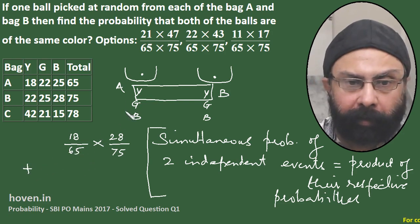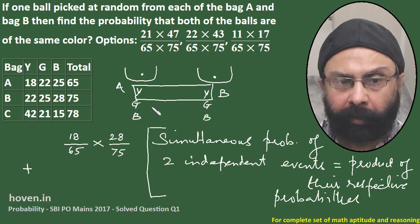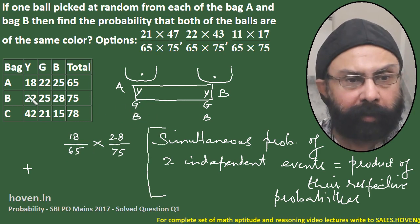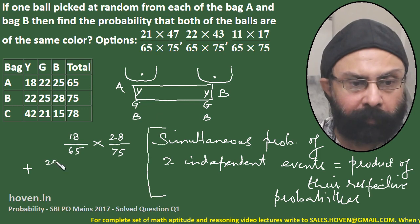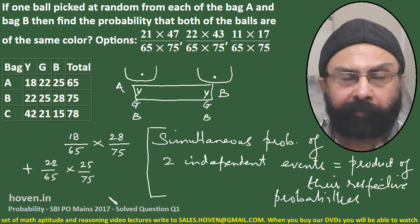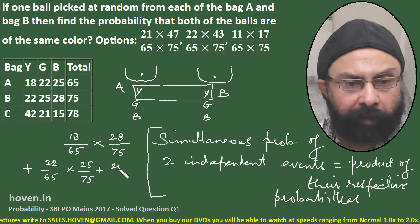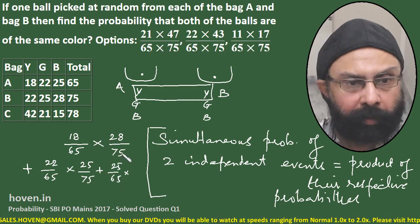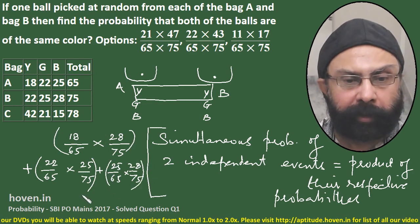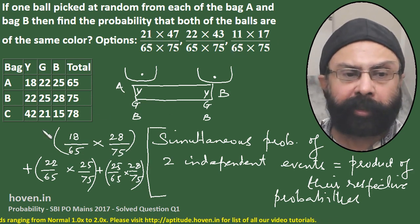Similarly, for both green: probability = 22/65 × 25/75. For both black: probability = 25/65 × 28/75. The requirement is that both balls are the same color, so we add these probabilities. This sum is nowhere in the given options, so the answer in this case is 'none of the above'.